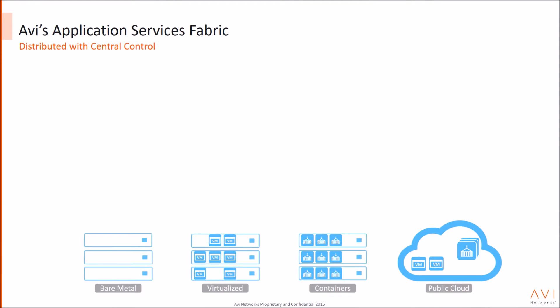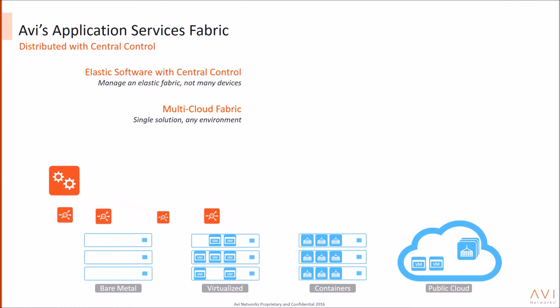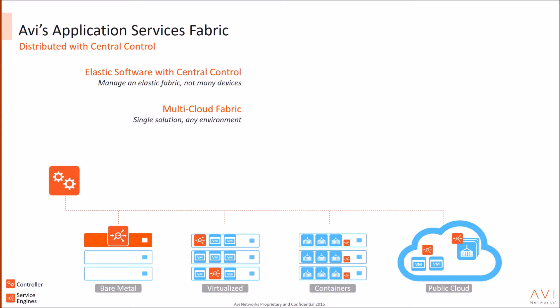First, a quick review of Avi's architecture. The core building block is a modern, distributed architecture with two components: a central controller and distributed service engines. Together, these form a single elastic fabric. The service engines can be provisioned as bare metal appliances, virtual machines, containers, or even in the public cloud.